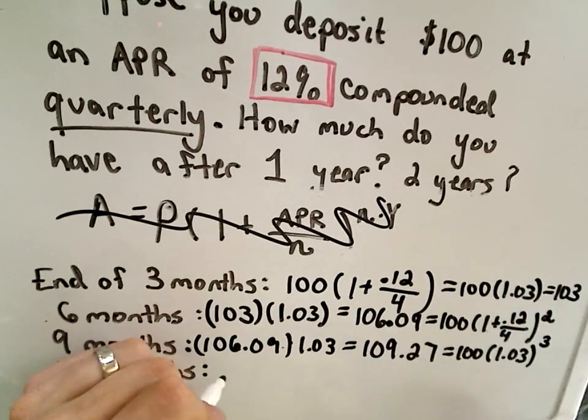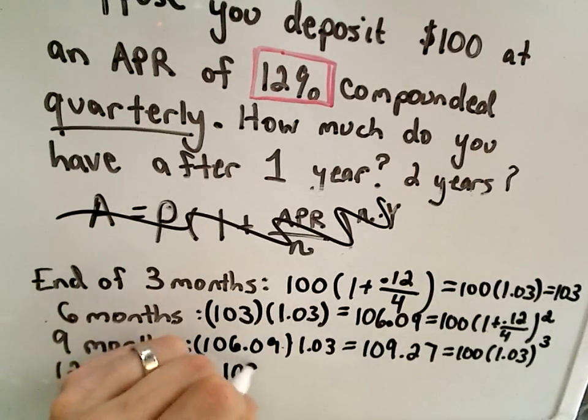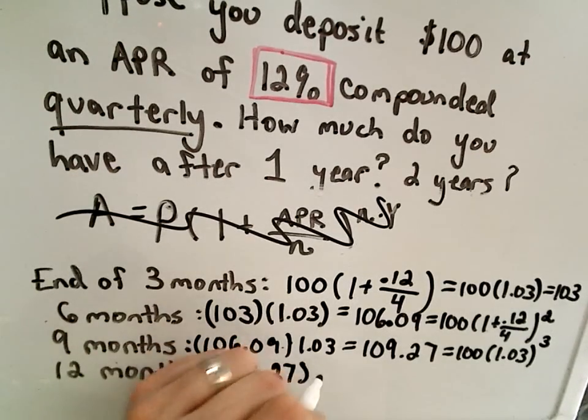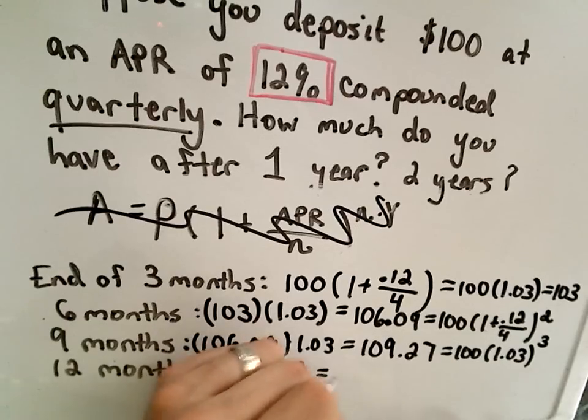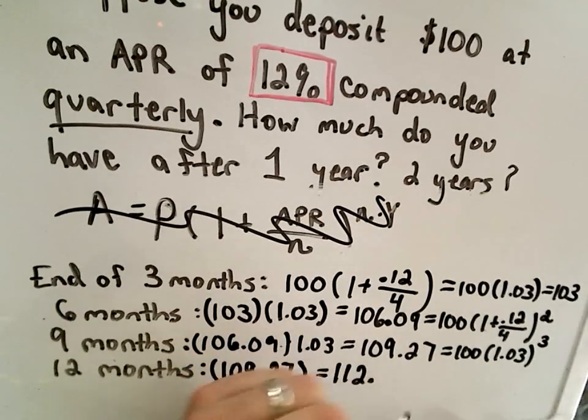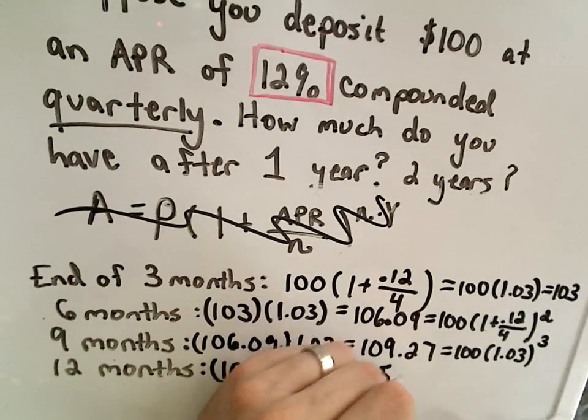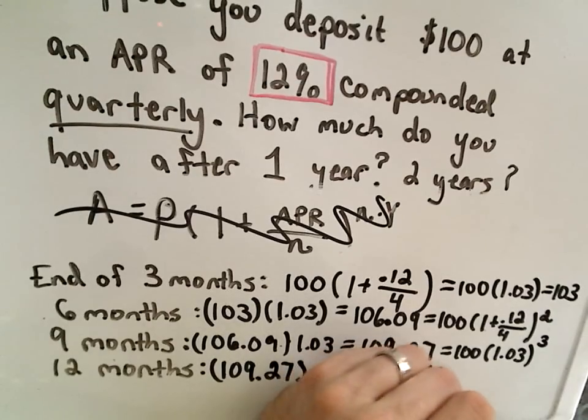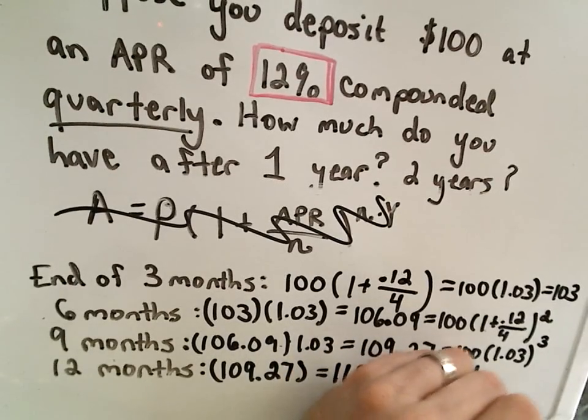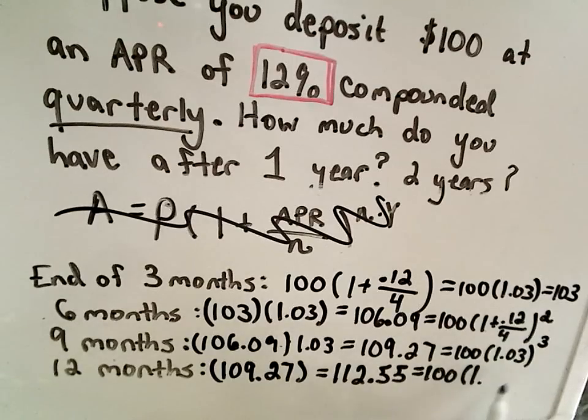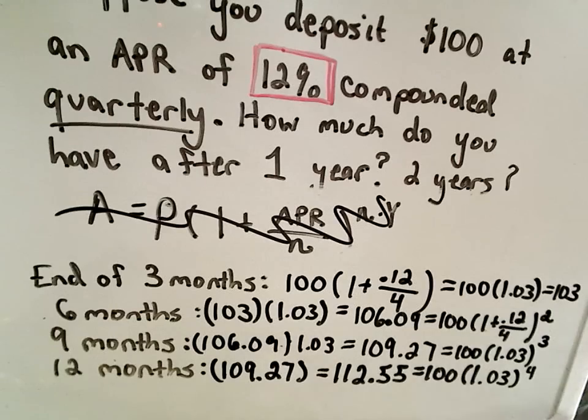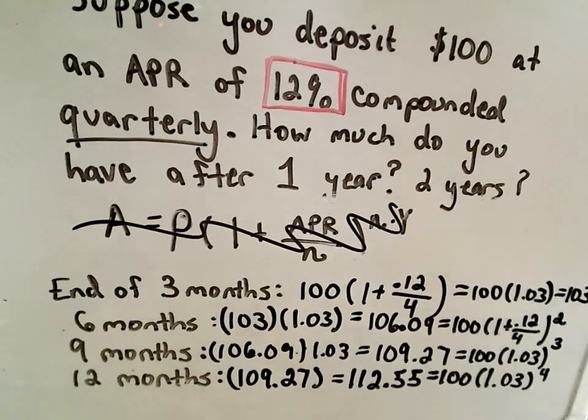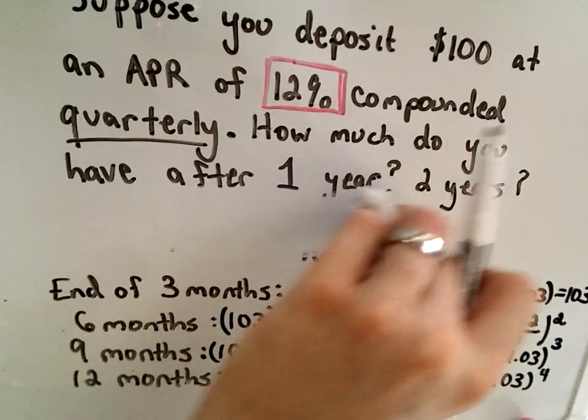Lastly, we'll take our 109.27. We'll multiply that by 1.03 to give our final amount. Pretty tedious stuff, for sure. Doesn't exactly get my heart racing here. So 112.55. And again, we could write that as our starting principal, 1 plus our APR, divided by the number of compoundings, which in this case was 0.03 raised to the fourth power. So that's basically where this formula is coming from.